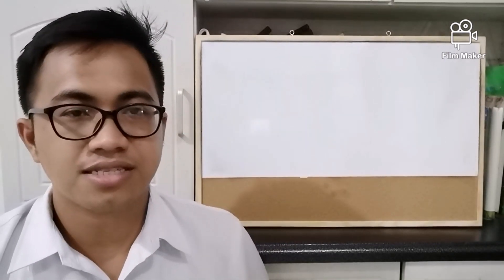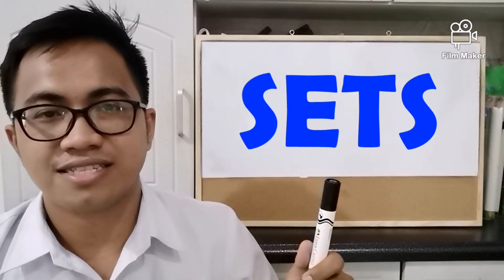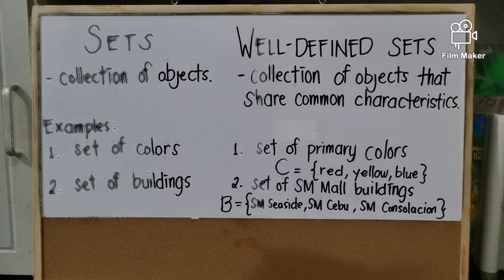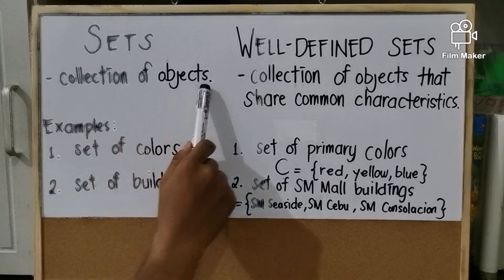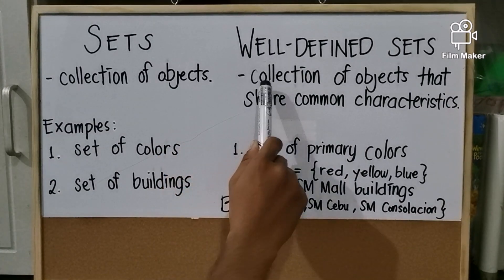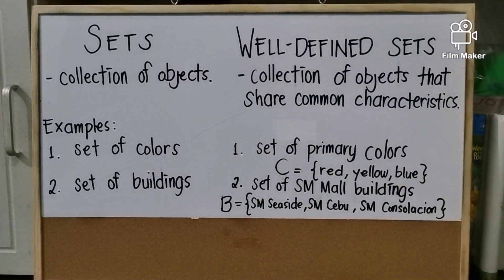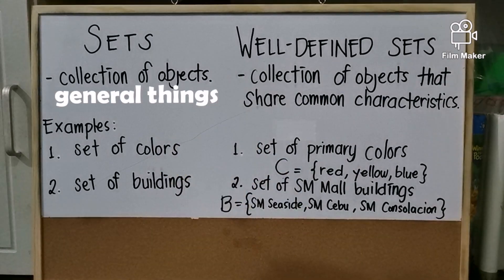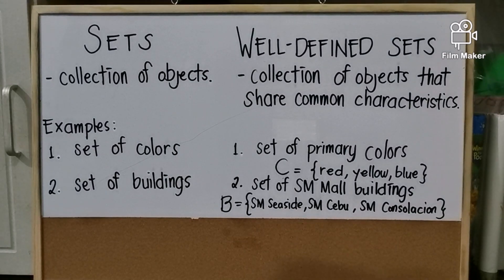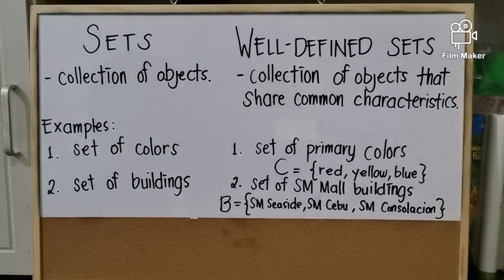This group of objects are called sets. Now let's learn more about sets. First, let's differentiate sets and well-defined sets. Sets are a collection of objects, while well-defined sets are a collection of objects that share common characteristics. To make it simple: sets are a collection of general things, while well-defined sets are a collection of specific things.